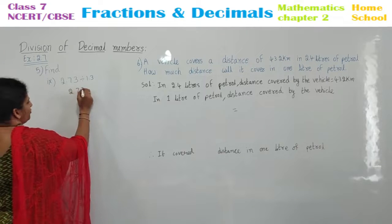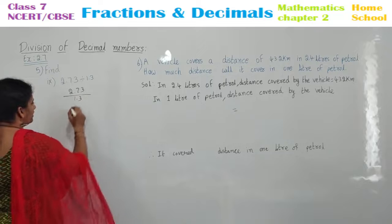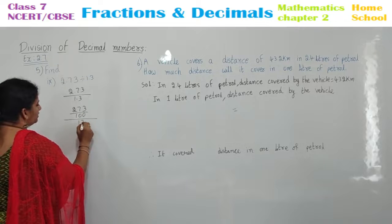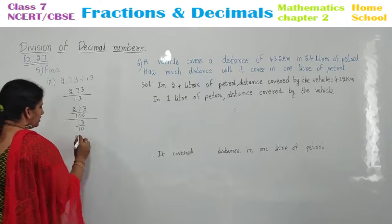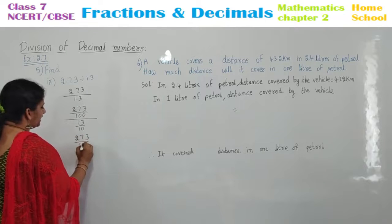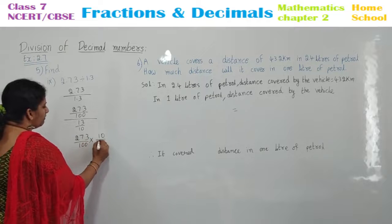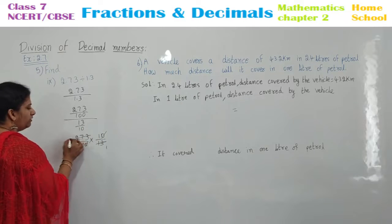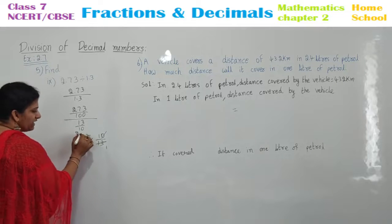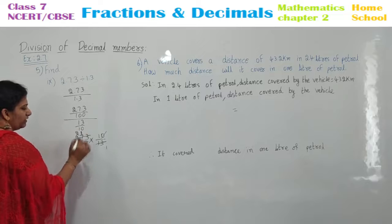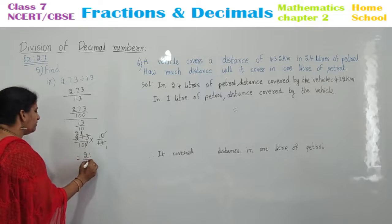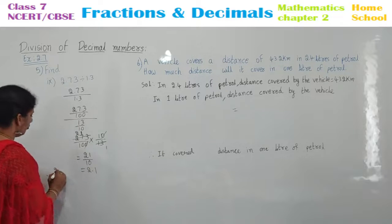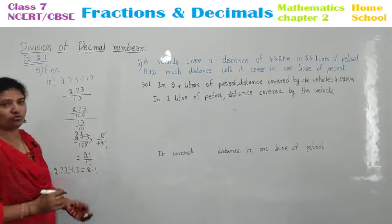Last problem in the fifth main: 2.73 divided by 1.3. Rewrite: 273 by 100 whole divided by 13 by 10. Bring to the numerator — do the reciprocal and multiply: 10 by 13. The 10s cancel. Using the 13 table: 13 ones are 13, 13 twos are 26, and 1 is left — meaning 13 ones are 13. That gives 21 by 10. Convert: 2.1 is your answer. Therefore, 2.73 divided by 1.3 is equal to 2.1.